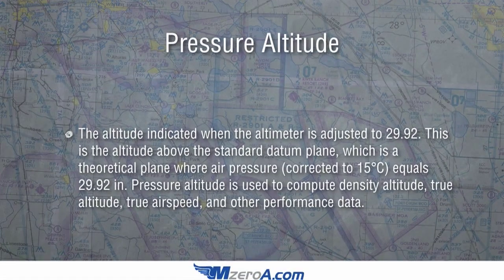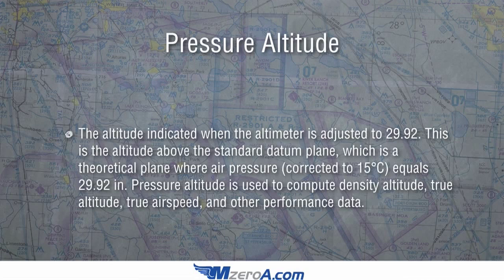Big one here — pressure altitude. Pressure altitude is the altitude indicated when the altimeter is adjusted or set to 29.92, because that's our standard altimeter setting. That is the altitude above the standard datum plane, which is a theoretical plane where air pressure, corrected to 15 degrees Celsius, equals 29.92. Standard temperature, standard pressure — that perfect standard day. You use pressure altitude to compute density altitude, true altitude, true airspeed, and a lot of other performance things for your performance charts in your POH, your pilot's operating handbook.